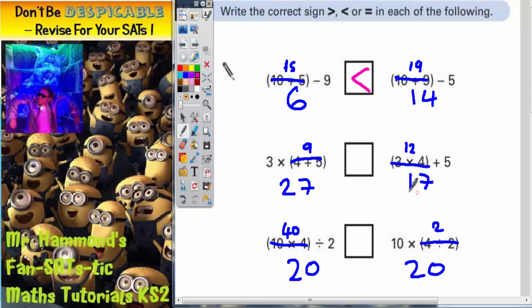27's bigger than 17. So the crocodile this time needs to face towards the 27. And all that means is 27 is greater than 17.